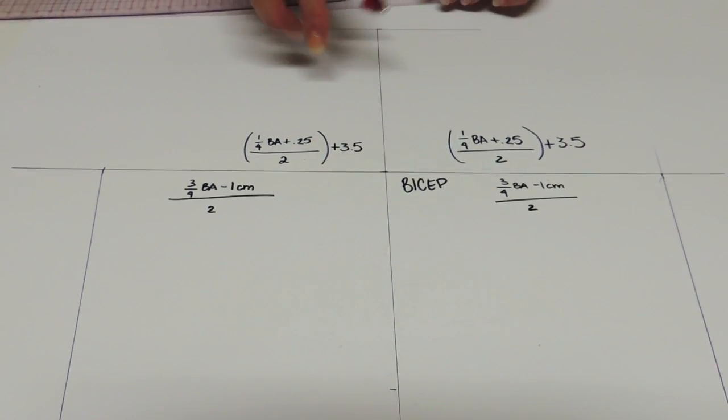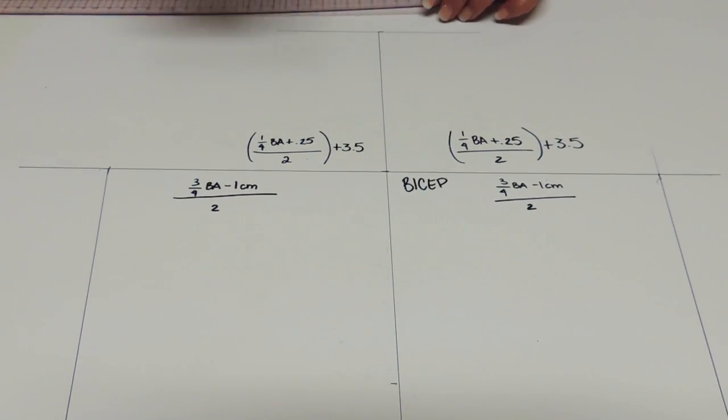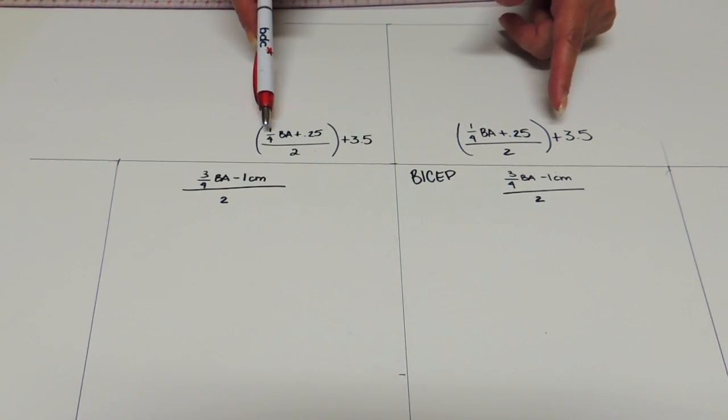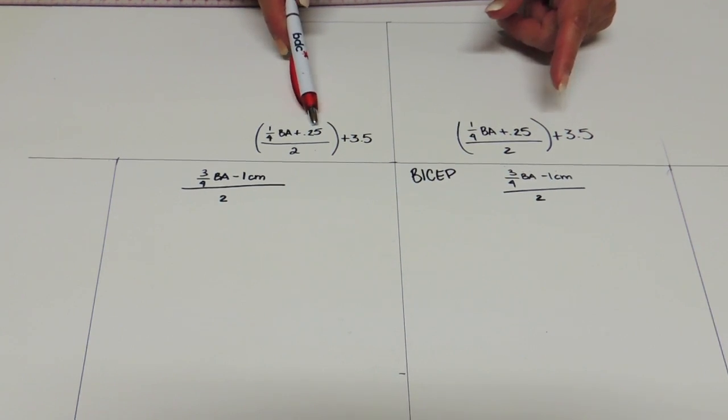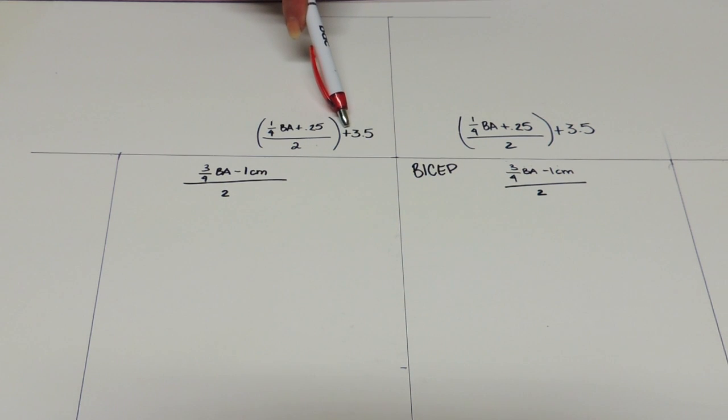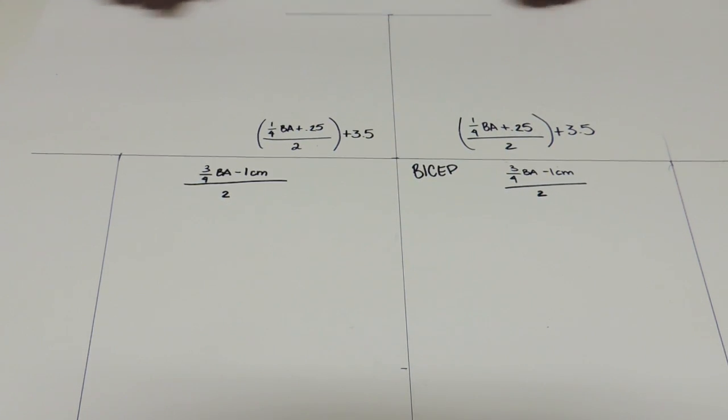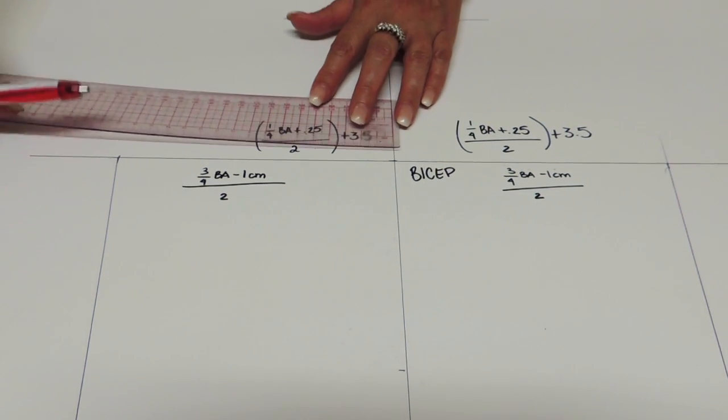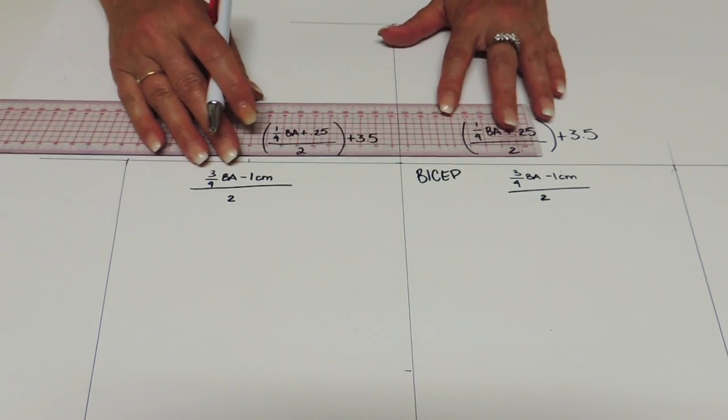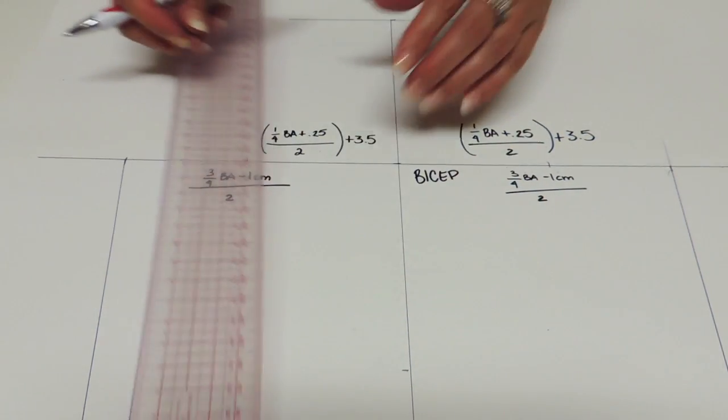So now what we're going to do, we're going to do construction line to trace the sleeve head shape and to do that first, the square, you're going to take 1 quarter of the bust arc plus 0.25 divided by 2 and you add 3.5 to that measurement. Same measurement, you're going to place it on each side of the center line. So mine is 9.4 and 9.4 and you're going to square towards the top.